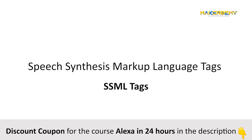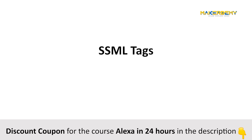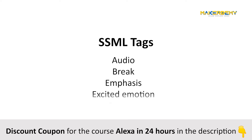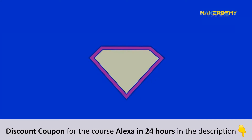To make Alexa sound more real and give us more control over Alexa's speech style, the Amazon Alexa team came up with a feature called Speech Synthesis Markup Language Tags, or simply SSML tags. The Alexa Skills Kit supports SSML tags. SSML tags act as an add-on gear to Alexa's speech and are an essential aspect of skill building. SSML tags have attributes such as audio, break, emphasis, excited emotion, prosody, and much more. Each of these attributes has its purpose in making the generated speech sound as human as possible. Just consider SSML tags to be like a superpower of Alexa.